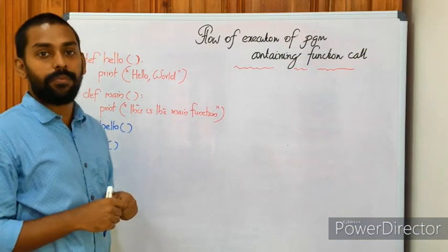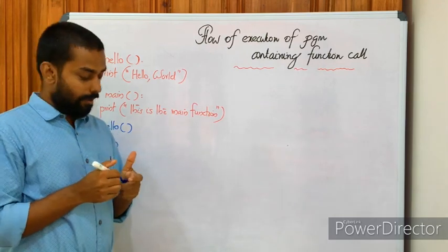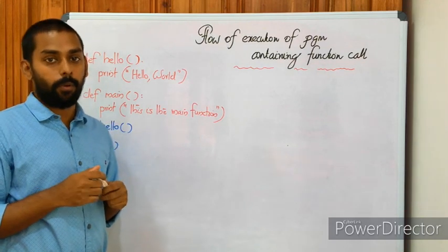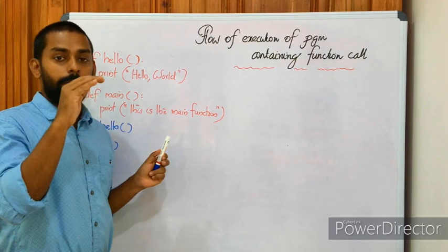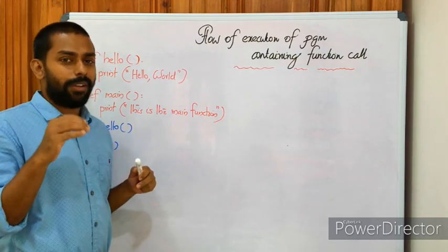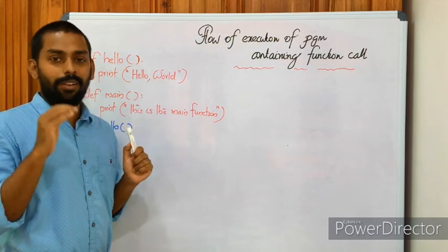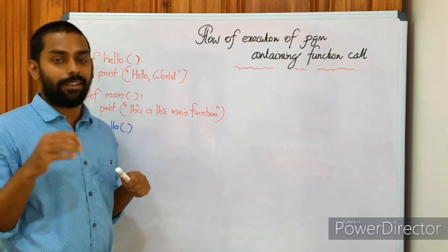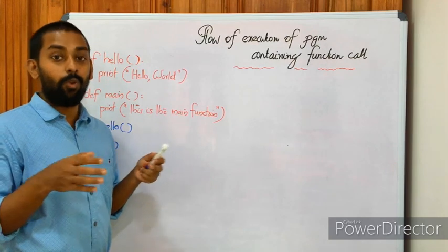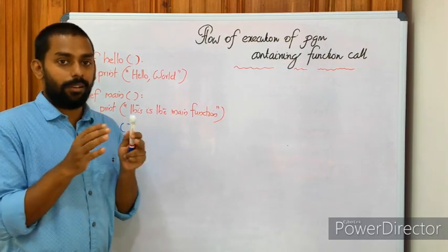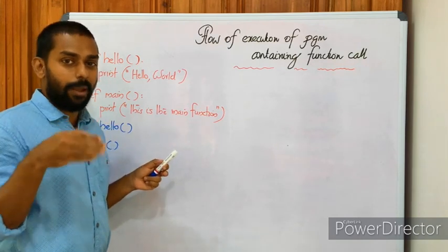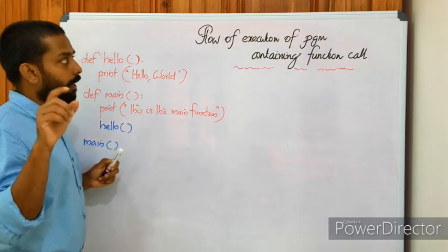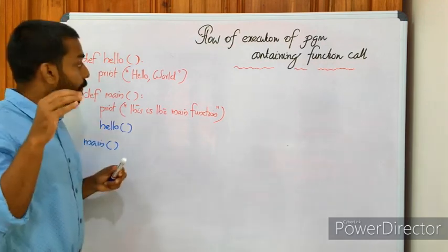Now let's look at another topic: flow of execution of a program containing a function call. Execution begins at the first statement of the program. Statements are executed one by one, from start to end. By default, the order of execution is somewhat sequential, but when there are jumping statements like break, continue, if-else, or looping structures, the order may change. In the case of a function call, the order definitely changes.